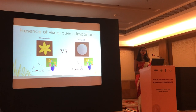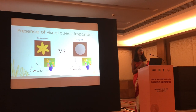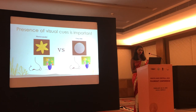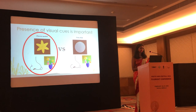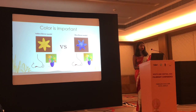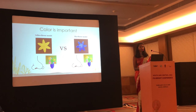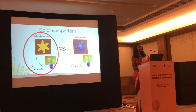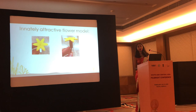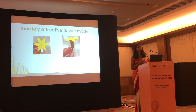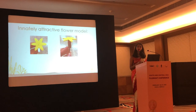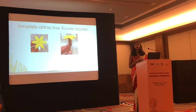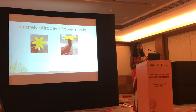We also found that the presence of visual cues is important. If you have a yellow flower model versus a gray disc, the hoverfly will go towards the yellow flower model. Color is also important — if you have a yellow flower versus a blue flower, most of the time the fly will go to the yellow flower. This has allowed us to parse out the important odor cues and visual cues that are staples for innate attraction when a hoverfly is trying to figure out what a flower is.